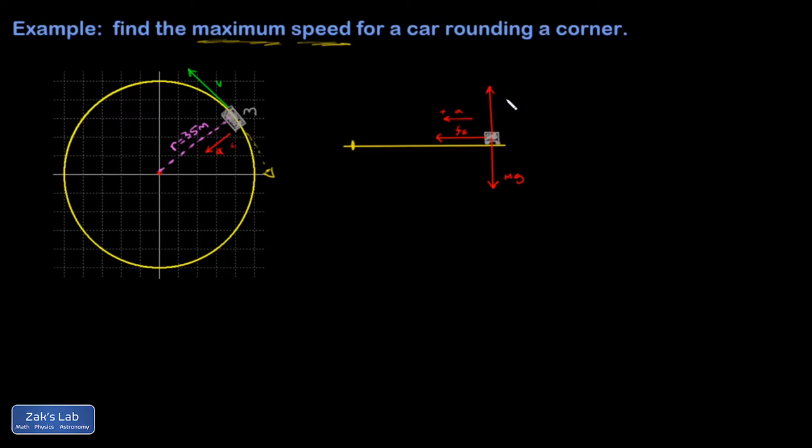And I have MG pointing down for the car and the normal force pointing up. And there are no other forces acting vertically, and it's a perfectly level surface. So I know that the normal force is simply going to cancel MG. That stops the car from moving up or down, which makes a lot of sense for this flat road.